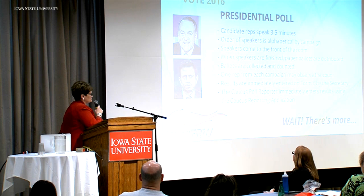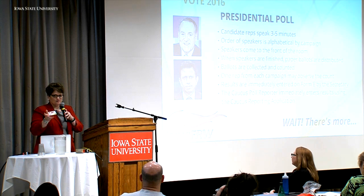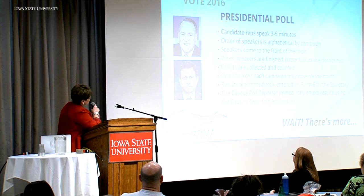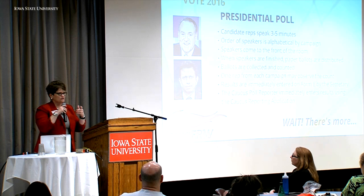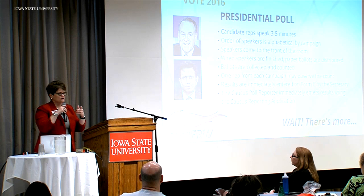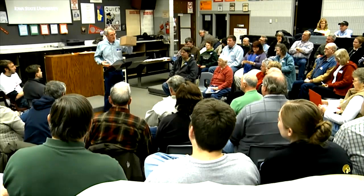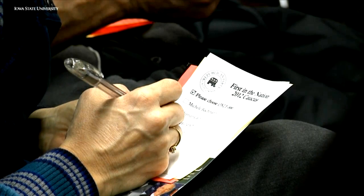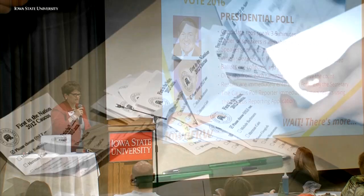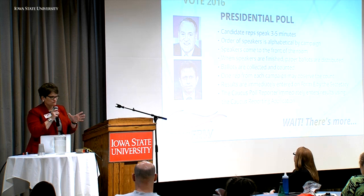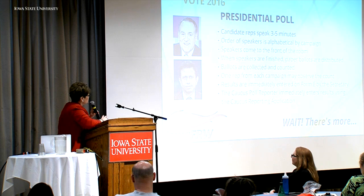For the presidential poll, each candidate's representative gets three to five minutes to speak — in my county they agree on three minutes. Any number of folks can fill that time. The order of speakers is alphabetical by the candidate's last name, so this year Governor Bush's folks would speak first and Mr. Trump's folks would speak last. When the speakers are finished, we send around ballots, collect them, and count them. One representative from each campaign can oversee the counting to make sure there's no monkey business.